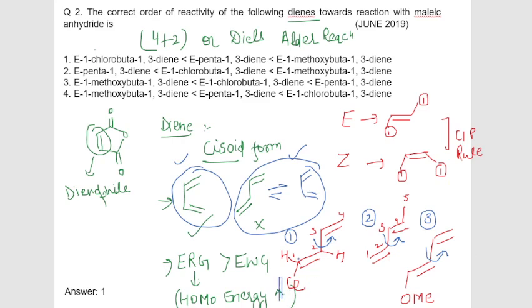After conversion, these different three groups we are seeing here - what we have is chlorine, what we have here is methyl, and here what we have is OME - will decide whether the reactivity is increasing or decreasing.